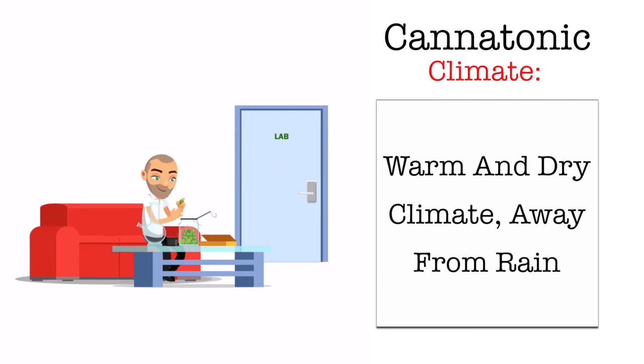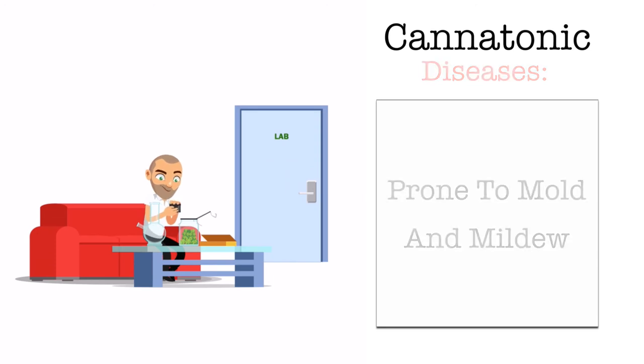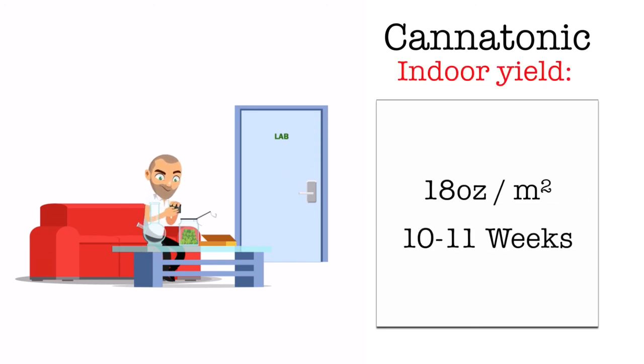It'll thrive in a warm and dry climate away from rain as it's prone to mold and mildew. Its indoor yield can be up to 18 ounces per square meter with an average flowering time of 10 to 11 weeks.